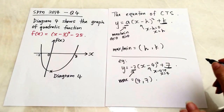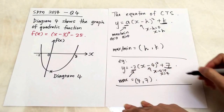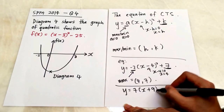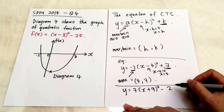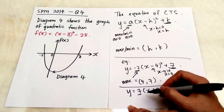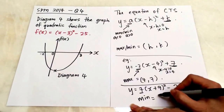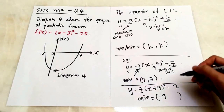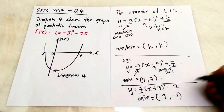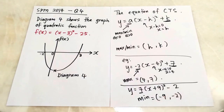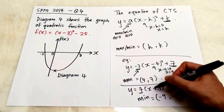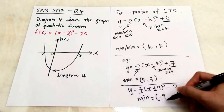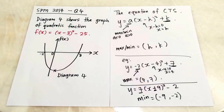One more example: y equals 7 times (x plus 9) squared minus 2. Since 7 is positive, this is a minimum. Set x plus 9 equal to 0, so x equals negative 9. The y-coordinate is negative 2. A useful tip: whenever the symbol inside the bracket is positive, the x-coordinate will be negative, and vice versa.